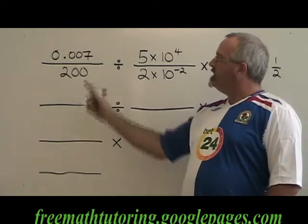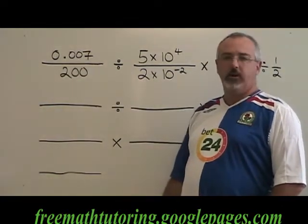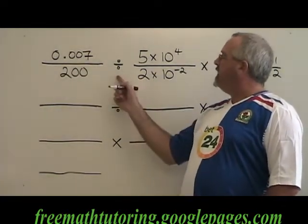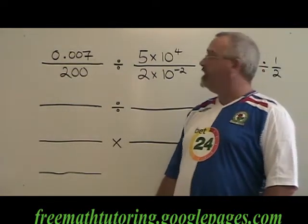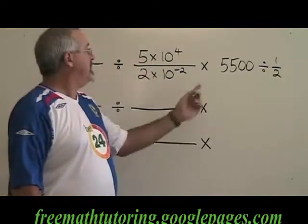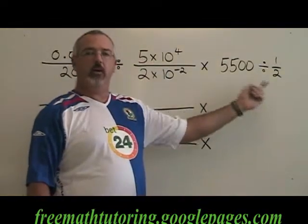Here we have 0.007 over 200 divided by 5 times 10 to the 4 over 2 times 10 to the negative 2 times 5500 divided by a half.